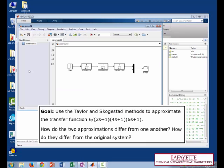Now our goal for today is to use the Taylor and the Skogestad methods to approximate this given series of transfer functions. How do the two approximations differ from one another and from the original model?